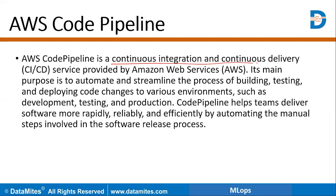Once you deploy a model in the AWS environment, it will be followed by the CodePipeline. If you are making any changes, it is going to be automatically followed by the CodePipeline. That is the speciality of AWS CodePipeline — that is what continuous integration and continuous delivery is.